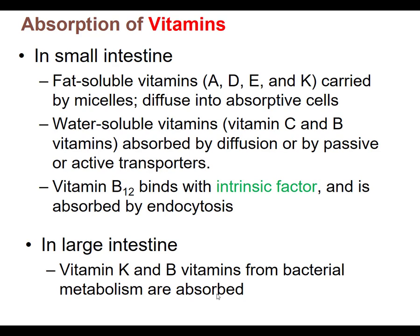Most vitamins are absorbed in the small intestine. However, bacteria in the large intestine can actually make vitamins like vitamin K and vitamin B. Since they're produced in the large intestine and can't travel backward, these vitamins are absorbed right there in the large intestine.